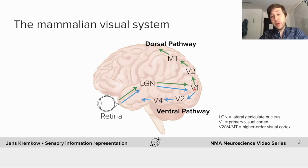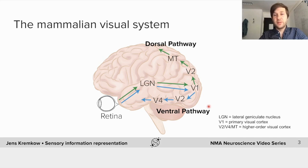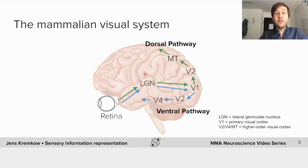Importantly, from visual cortex this information is broadcasted and transmitted along many different pathways — for example the dorsal pathway and the ventral pathway — to so-called higher visual cortical areas that are important for complicated visual processing. In today's lecture I will mainly focus on the so-called early visual system: the retina, the LGN, and V1.